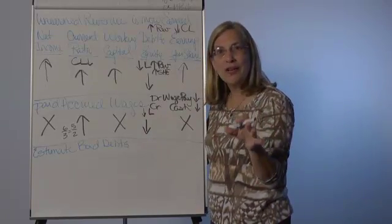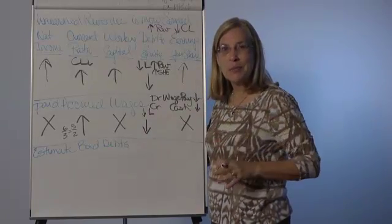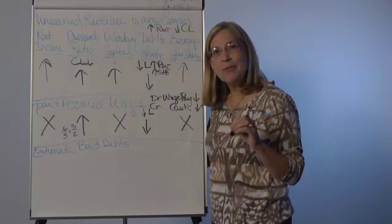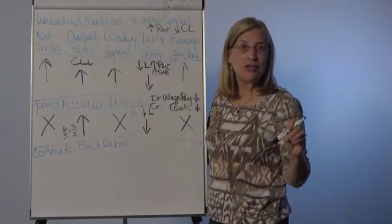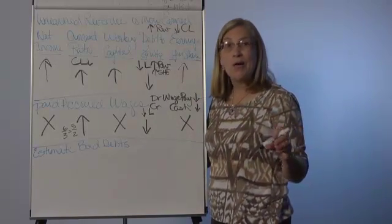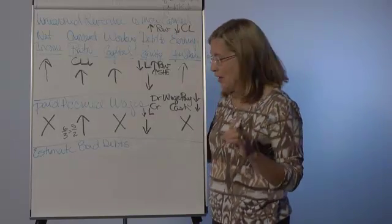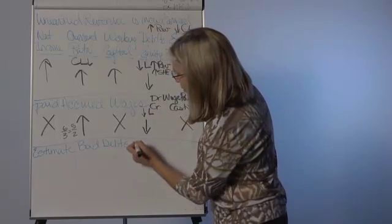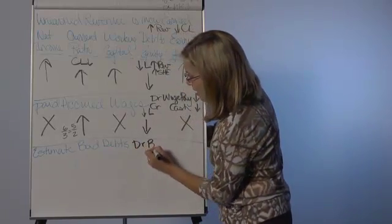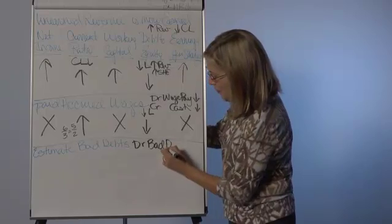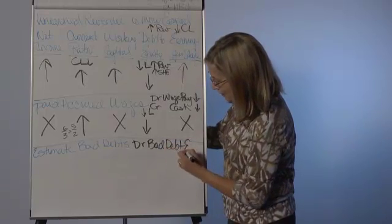And finally, I'd like to look at an adjusting entry called estimating your bad debts. And you'll remember that no matter if you use the percentage of sales method or if you use the aging of accounts receivable method, the entry stays the same. We're always going to be debiting bad debt expense, doubtful accounts expense, or uncollectible accounts expense.